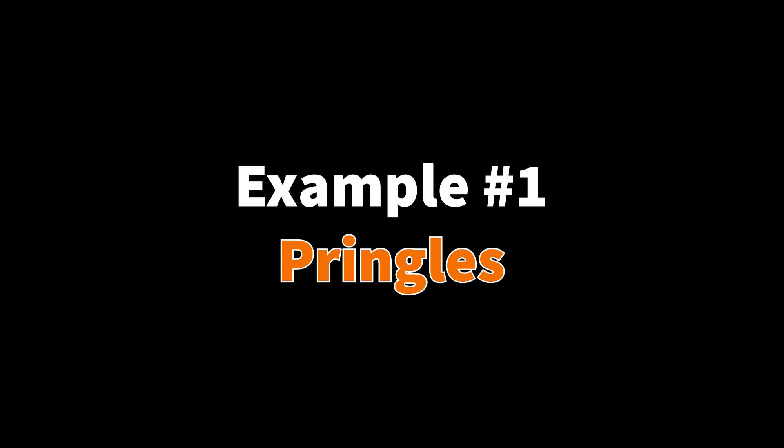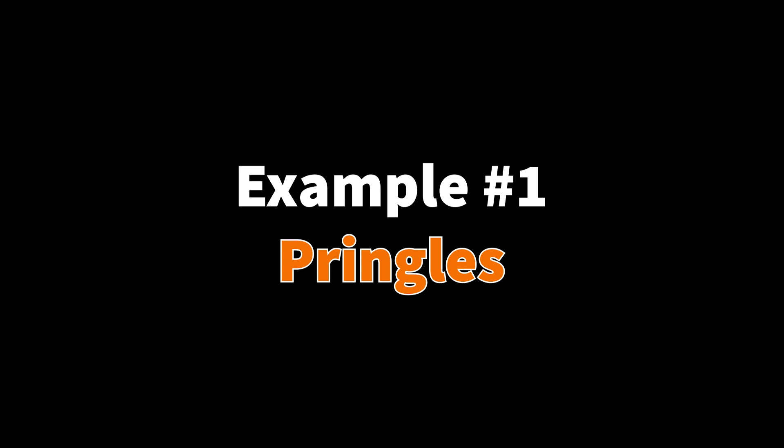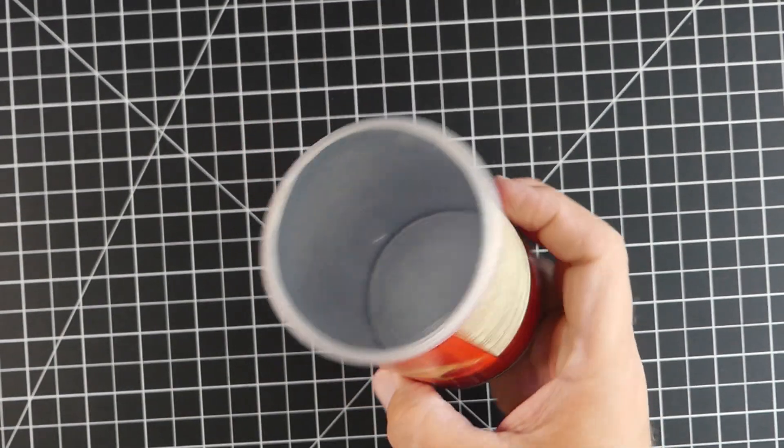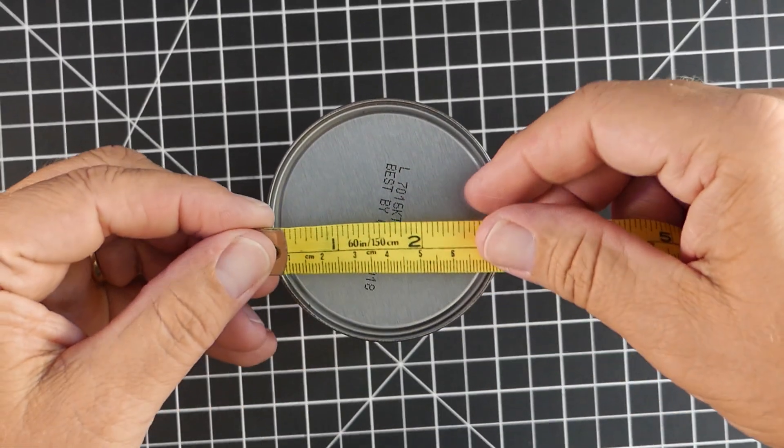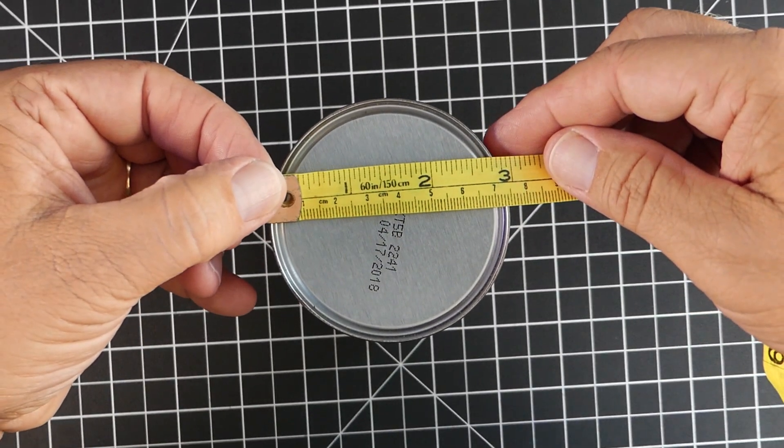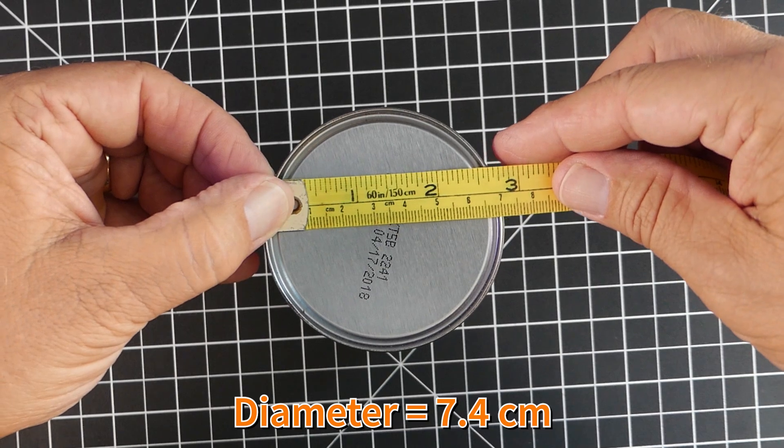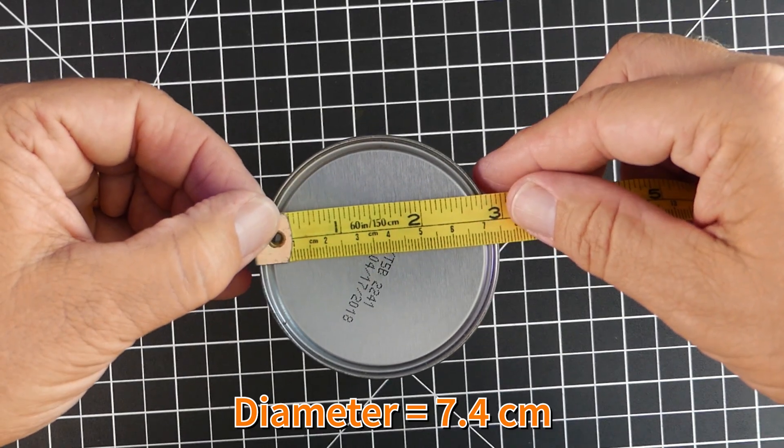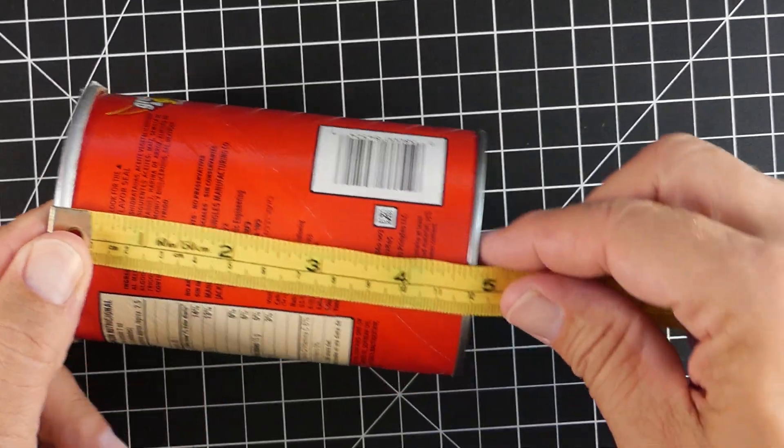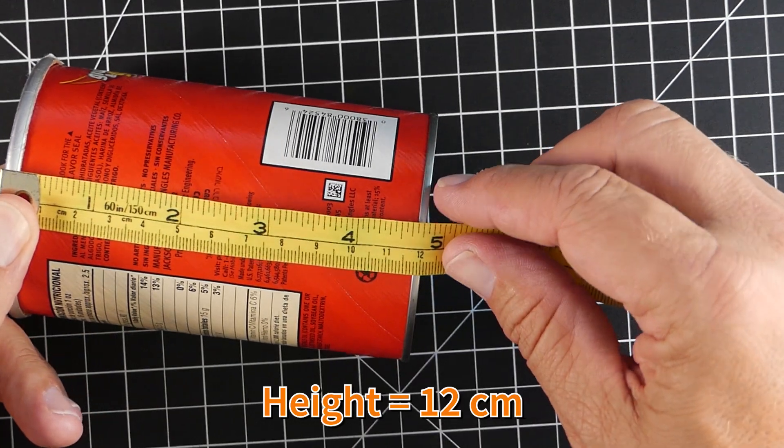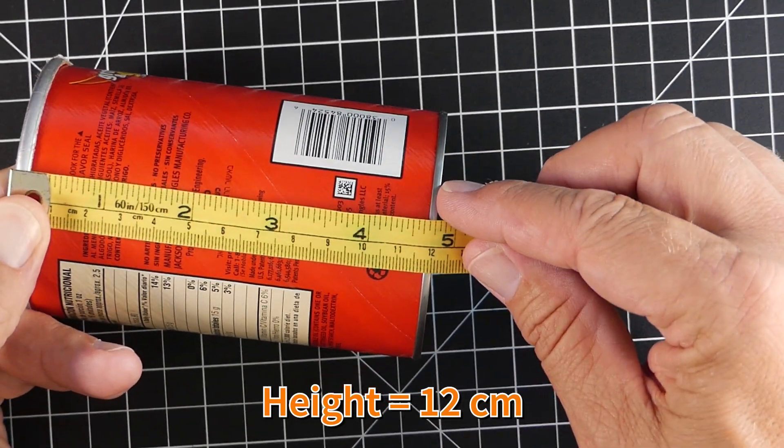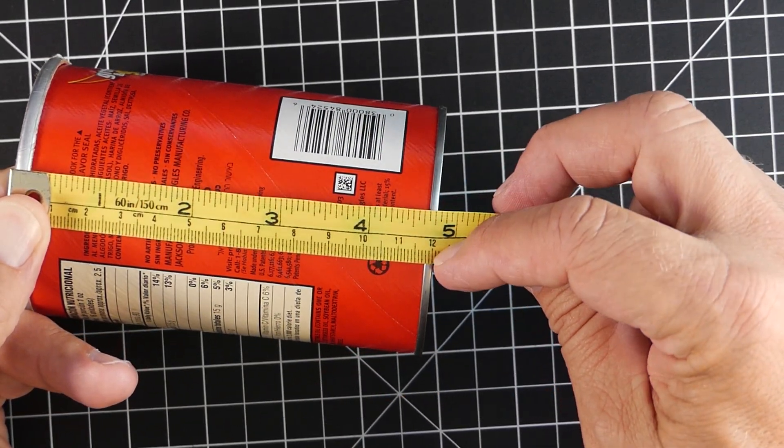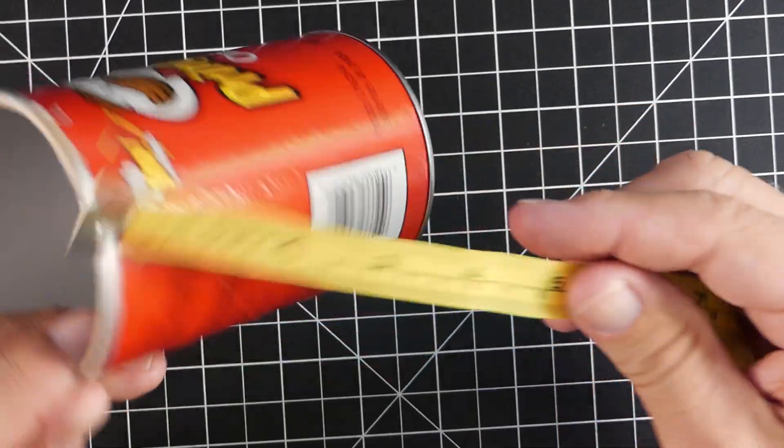So let's look at three examples. The first example we're gonna look at is the Pringles can. Now, in this particular one right here, we already know that the circle is the base. So, I'm measuring in centimeters in this one, and I see that my diameter is 7.4, which is the distance across. The height, or the distance between my bases, is 12 centimeters. So those are two key numbers.